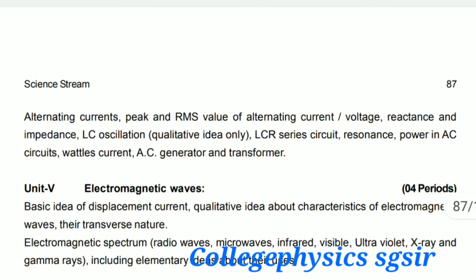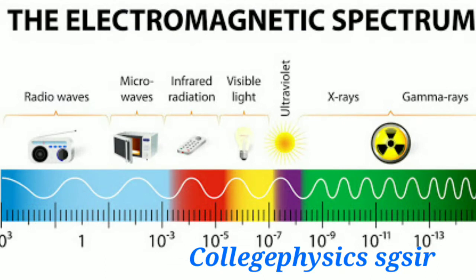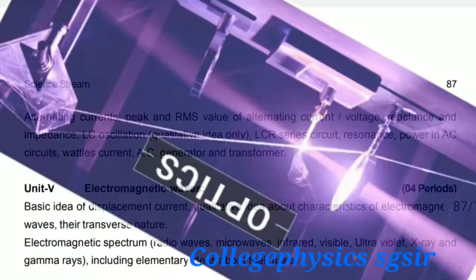Unit 5 is Electromagnetic Waves. Here we discuss the basic concepts of Maxwell's electromagnetic equations, displacement current, and the electromagnetic spectrum including radio waves, microwaves, infrared, visible light, UV, X-rays, and gamma rays.